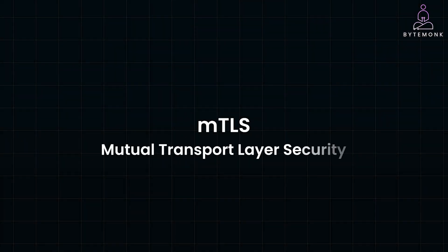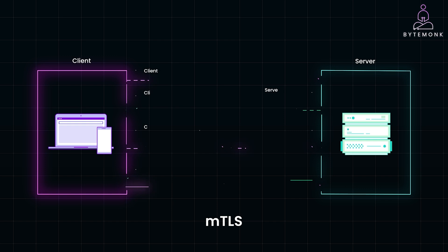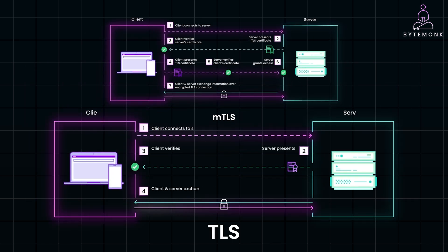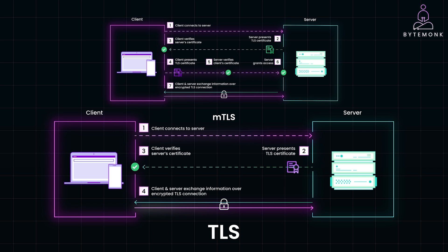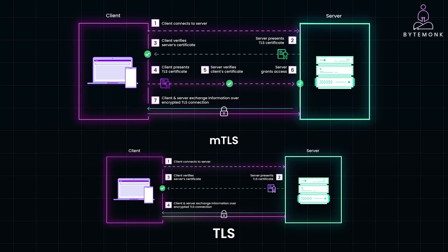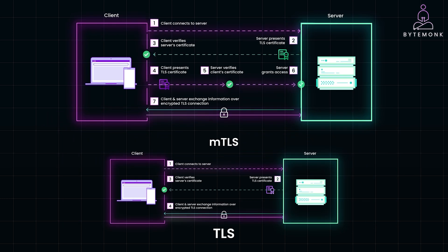MTLS, or Mutual Transport Layer Security, is a security protocol where both the client and server mutually authenticate each other before establishing a connection. It builds on the standard TLS protocol, which is already widely used to secure internet communications like HTTPS. While TLS ensures the server is trustworthy, MTLS adds an extra layer of security by verifying the client as well.